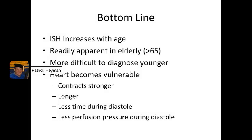The bottom line is that isolated systolic hypertension is going to increase with age as there are fewer and fewer elastic fibers in the aorta and the aorta becomes stiffer. It becomes readily apparent typically in elderly patients around age 65, and it's more difficult to diagnose in younger patients, though it can still occur in them more subtly. As a result of isolated systolic hypertension, the heart becomes vulnerable — it requires more oxygen, contracts stronger and longer, there's less time during diastole to rest and perfuse, and because diastolic pressure is not as high, there's less perfusion pressure during diastole. All of that makes the heart extremely vulnerable to ischemia.